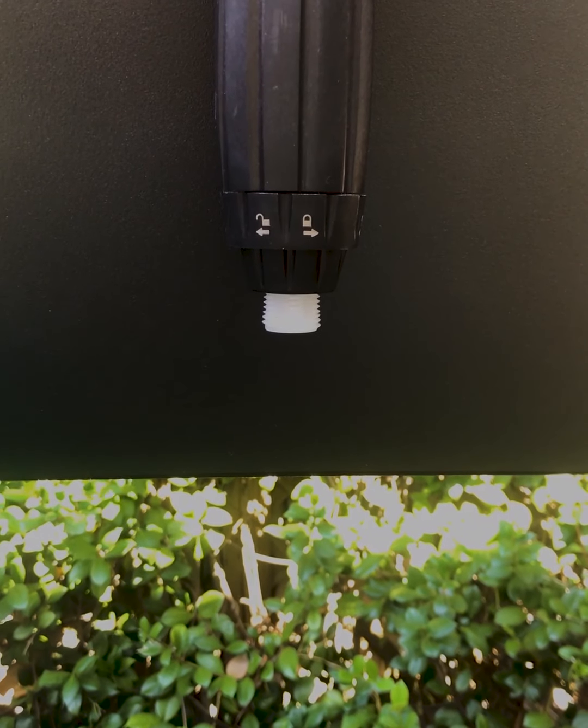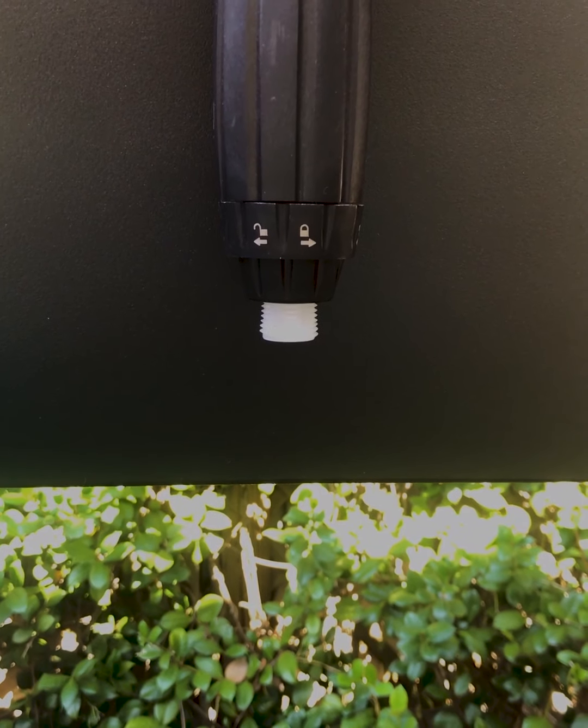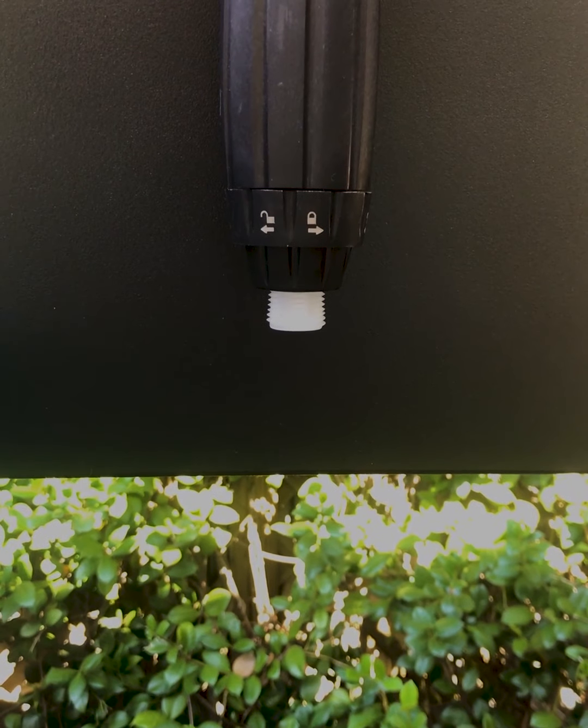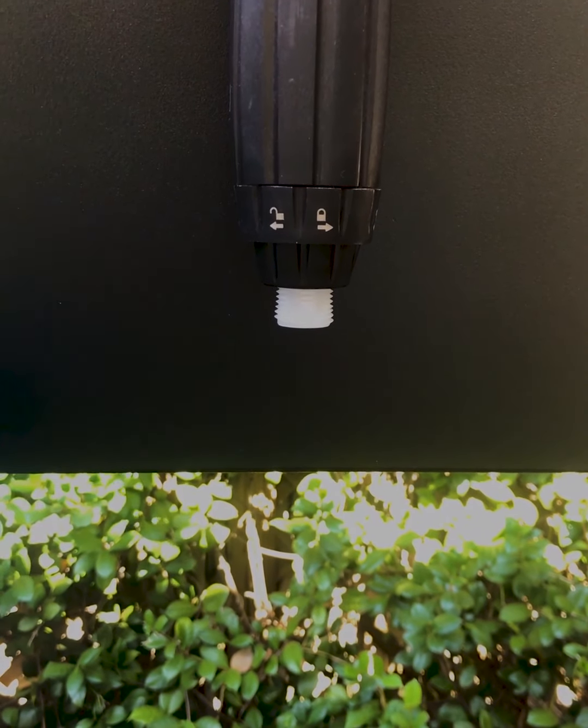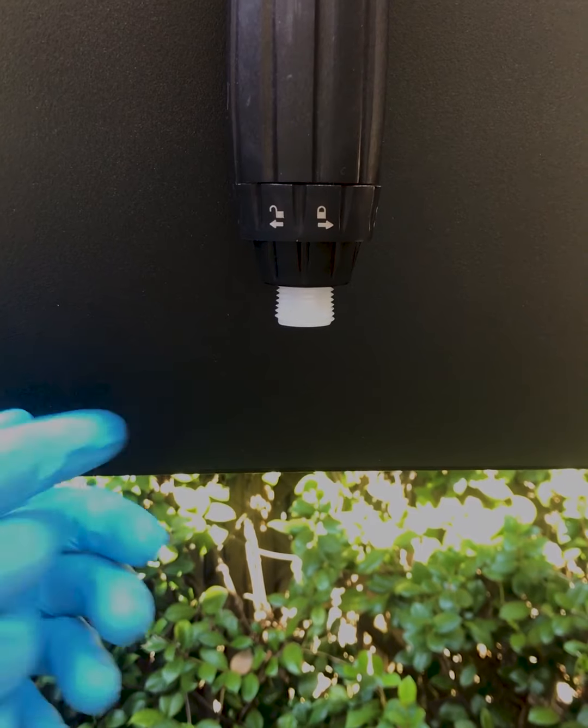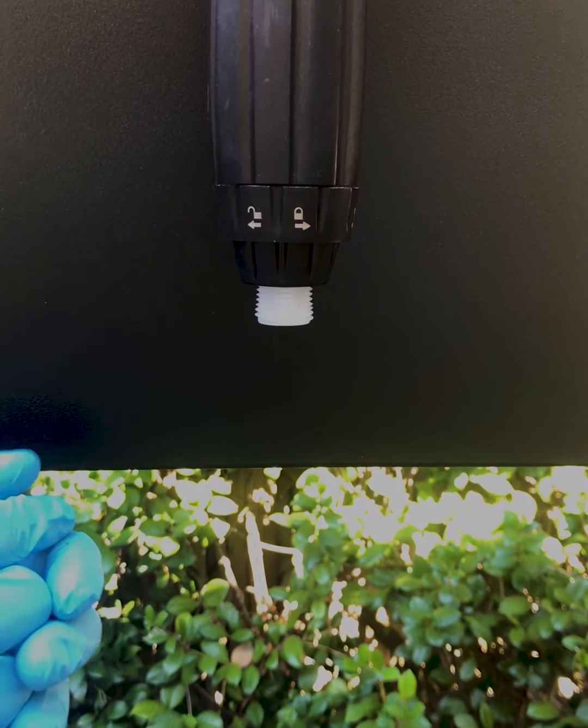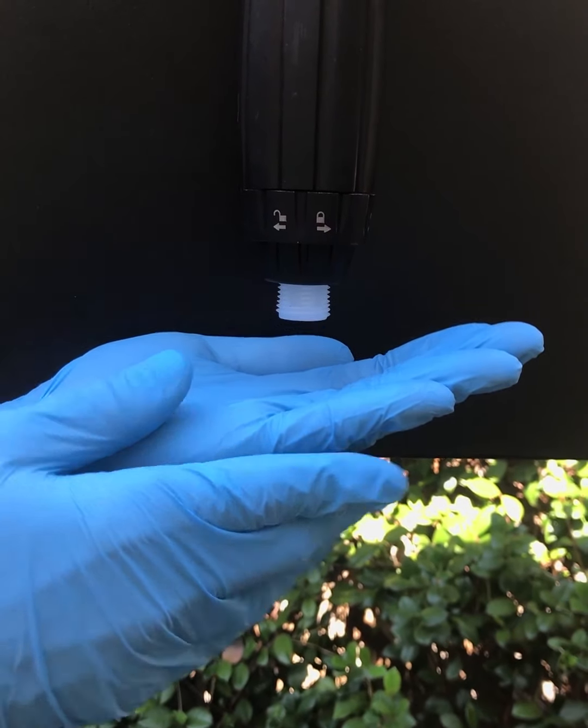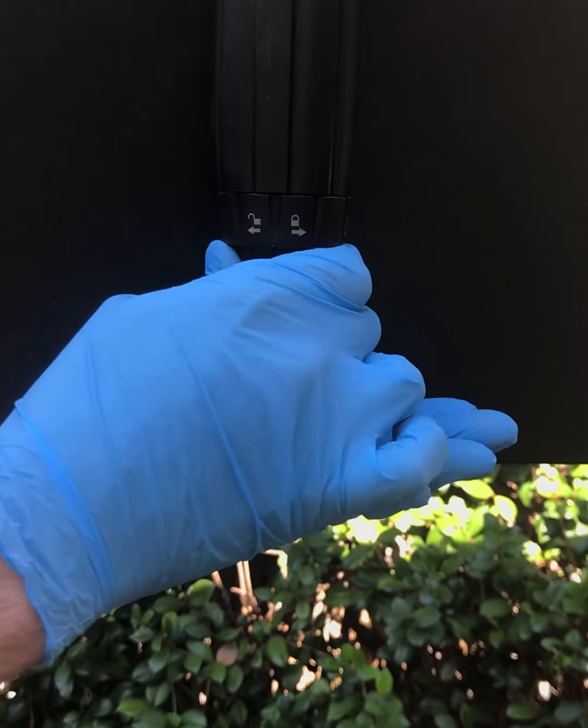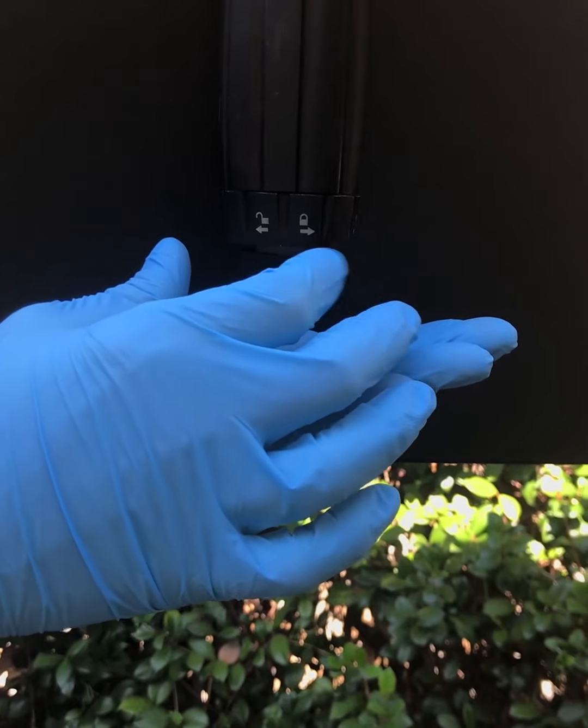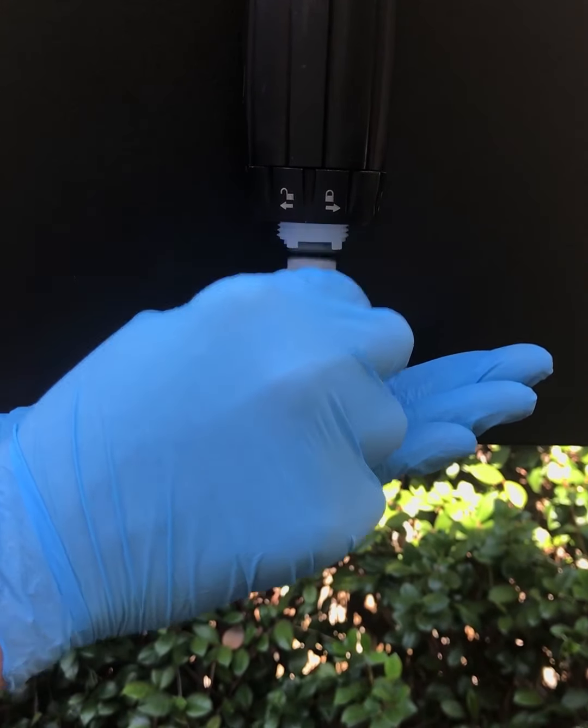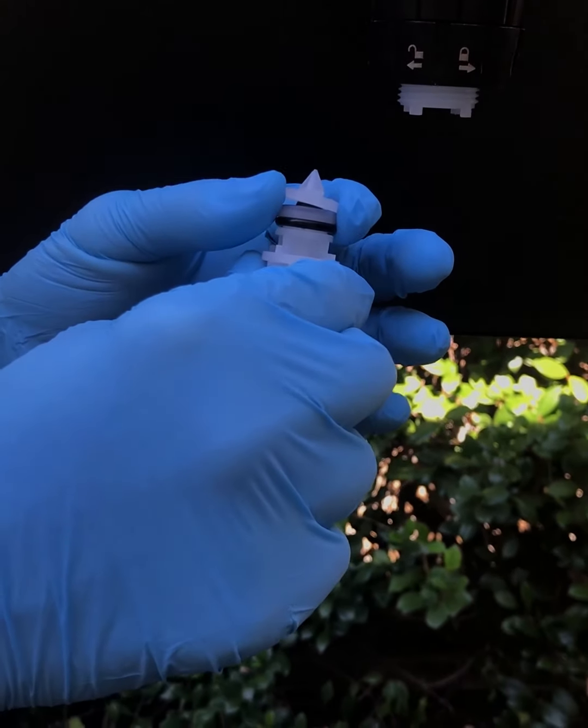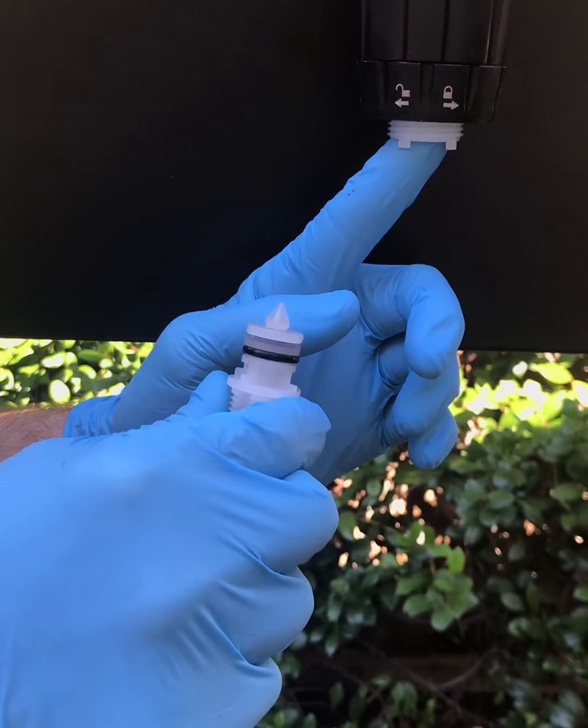Now we're going to remove and inspect the check valve. Keep in mind, there may still be undiluted chemical inside the stem assembly, so take all proper precautions when handling these components. What we're going to do is locate the check valve nut at the bottom of the stem assembly and remove, keeping one hand underneath all the parts in case something is to fall down during this process. Remove the check valve nut and pull down on the check valve barb. Now the check valve assembly may come with the barb or it may stay up inside the stem itself.